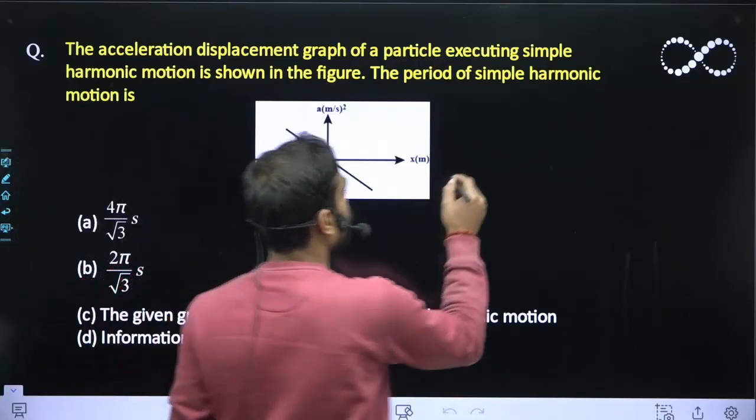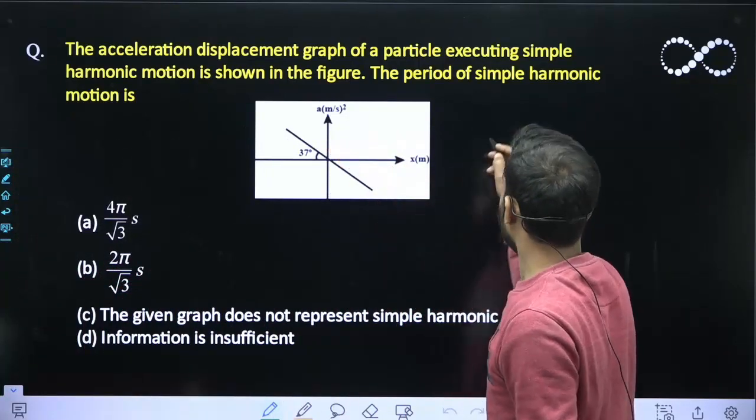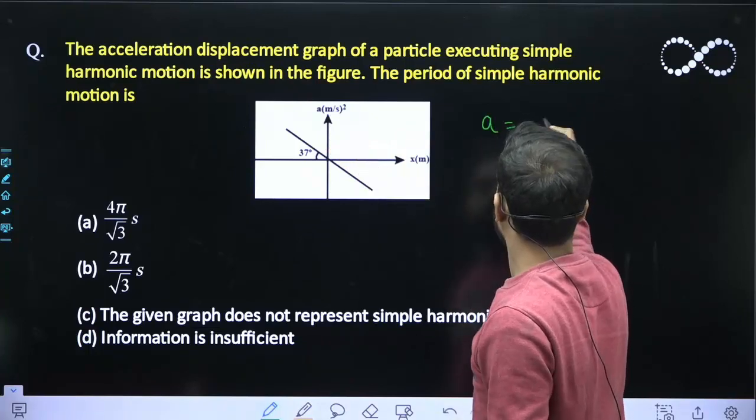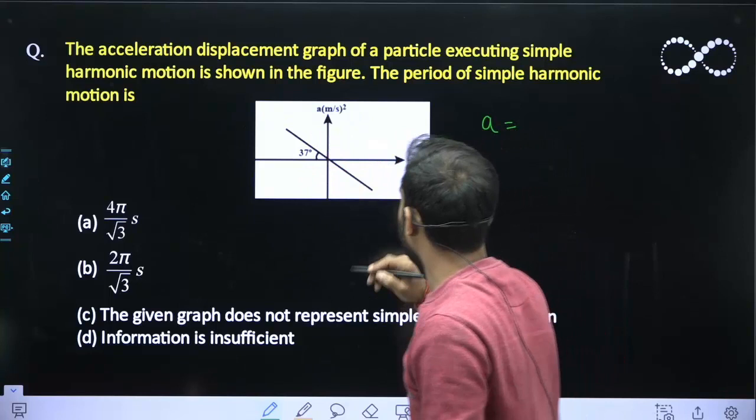So, if you see this graph, by seeing the graph, I can say acceleration is equal to slope. Right, the slope of this line will be...